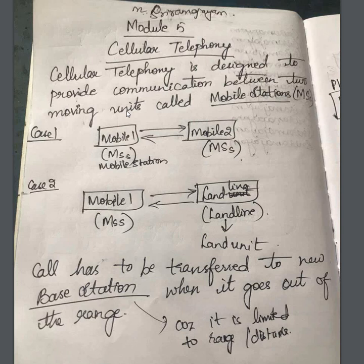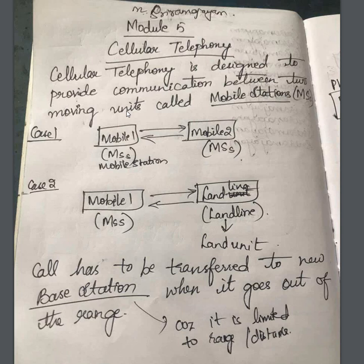Even if the moving thing is not mobile, it should still give communication — irrespective of whether it is mobile or immobile. We call that a mobile station, abbreviated as MS. Two cases exist: one mobile trying to communicate with another mobile, and one mobile trying to contact a landline. For mobiles it is called mobile station (MS); for landlines it is called land unit.